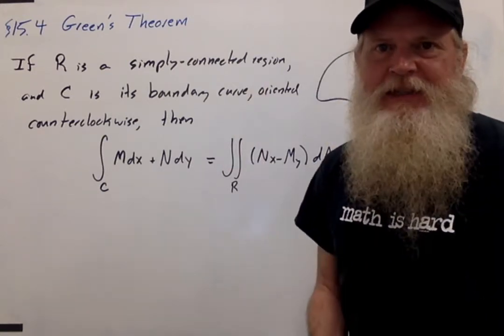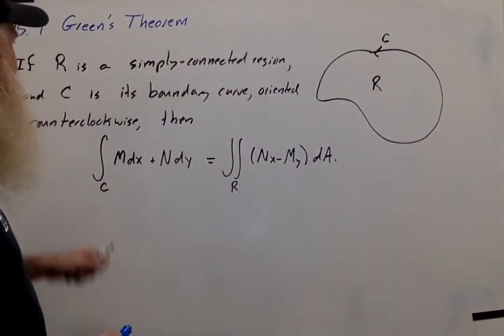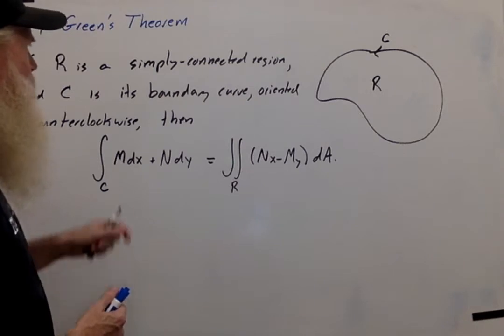So here's what Green's Theorem says. Suppose that R is a simply connected region, and C is its boundary curve oriented counterclockwise.